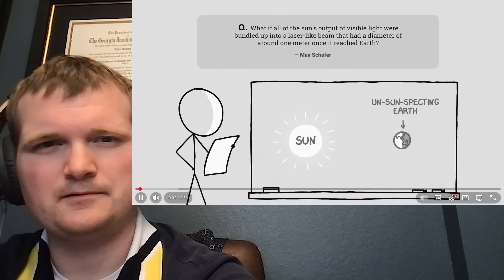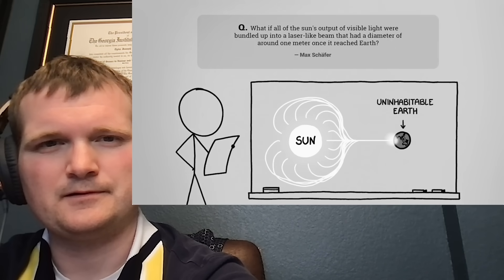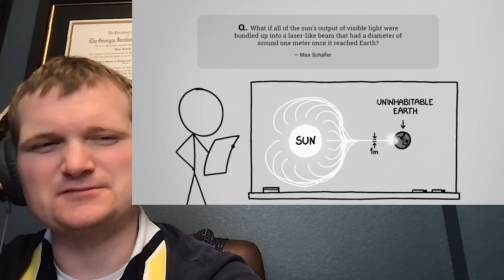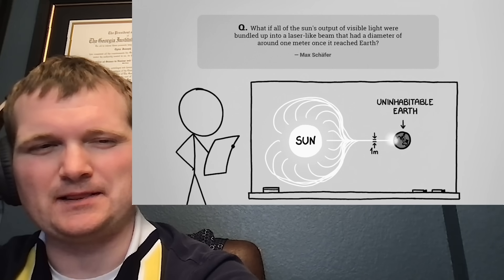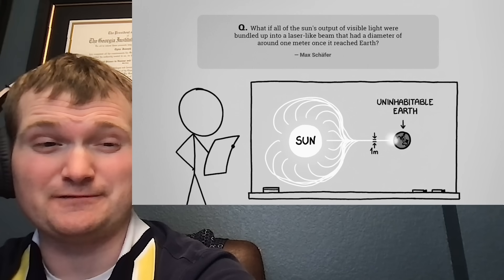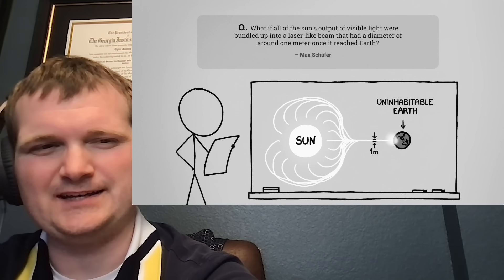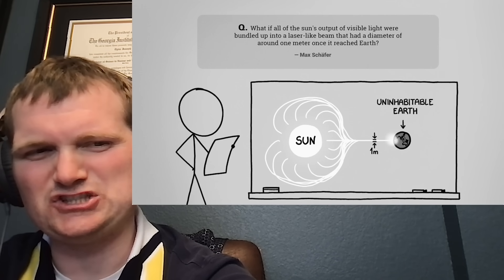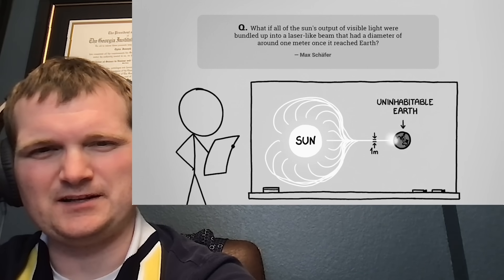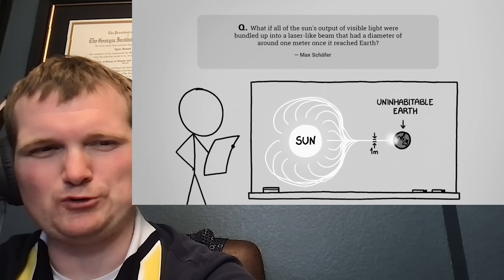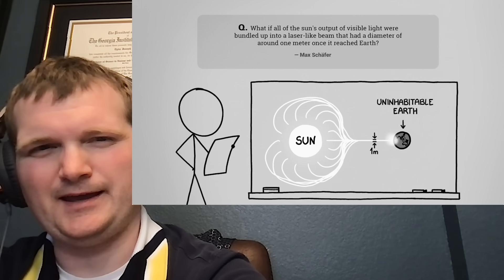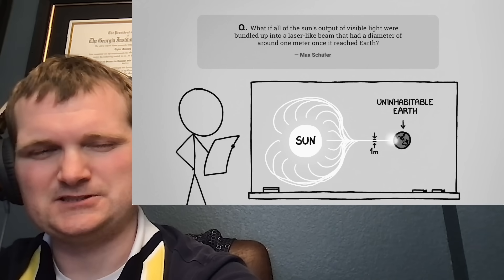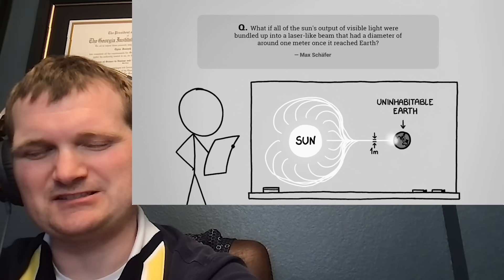This question comes from Max, who asks, what if all the sun's output of visible light were bundled up into a laser-like beam that had a diameter of around one meter once it reached the Earth? So the sun puts out about 3.8 times 10 to the 26th power watts, or 100 billion trillion nuclear plants. Now, Earth only would intercept about one part in 2 billion of that. And this Max person is saying, let's focus it into one meter. So 3.8 times 10 to the 26th watts per square meter.